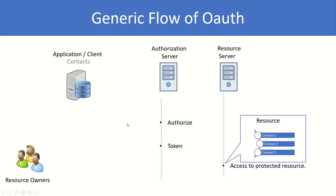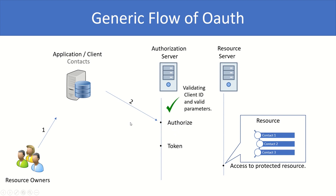The first thing that will happen is we ask users to go to the application link — for example, https://application.com. Once the user navigates this link on their user agent, the first redirection your application has to do is send the user to the authorize endpoint. The authorize endpoint will validate the user credentials and the client ID of your application, just to check whether the request received by the authorization server is legitimate.